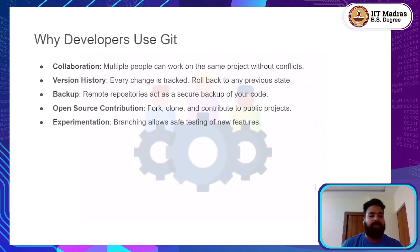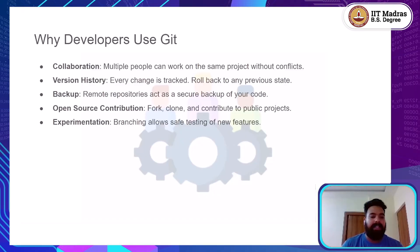Now let's reflect for a moment on why developers rely on Git so heavily. First and foremost, Git makes collaboration seamless — multiple people can work on the same project simultaneously without stepping on each other's toes. Through features like branching, everyone can work on their own version of the project and later merge their changes. Secondly, Git maintains a detailed version history, recording every change that has been made, giving you the ability to go back to any previous state if something breaks. Thirdly, having your project pushed to a remote repository acts as a backup, safeguarding your work even if something happens to your local machine.